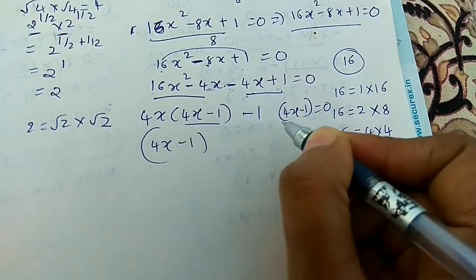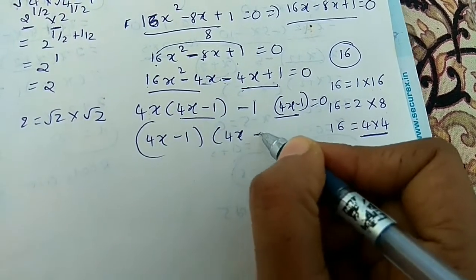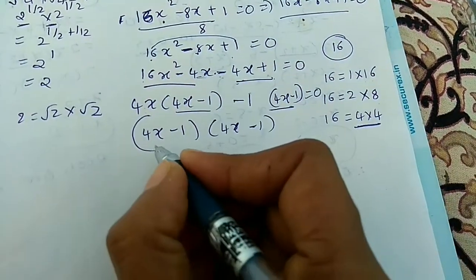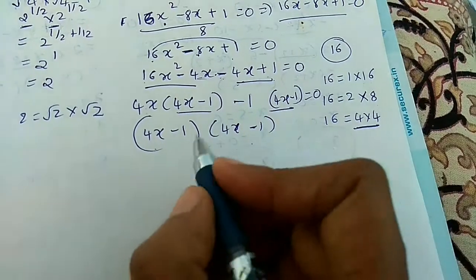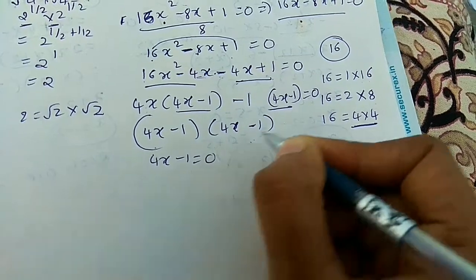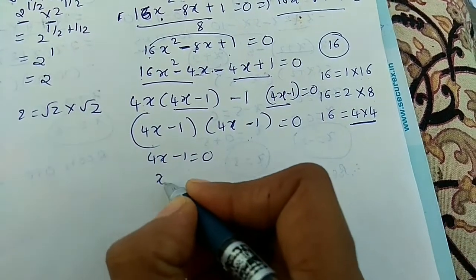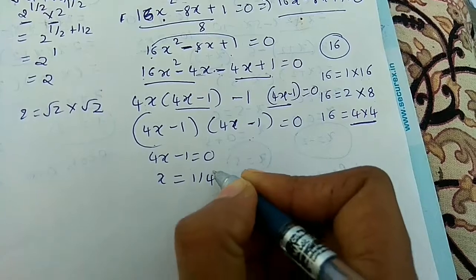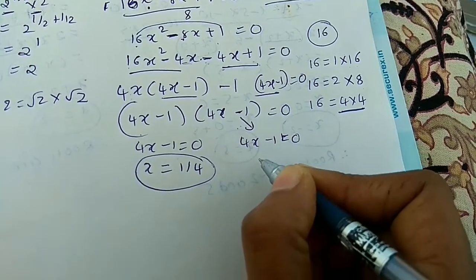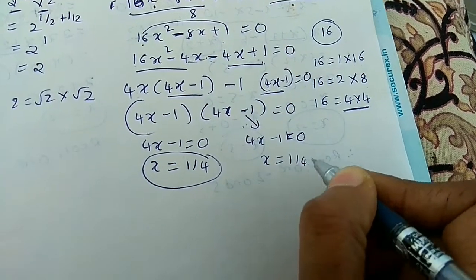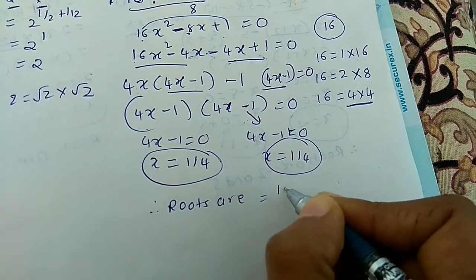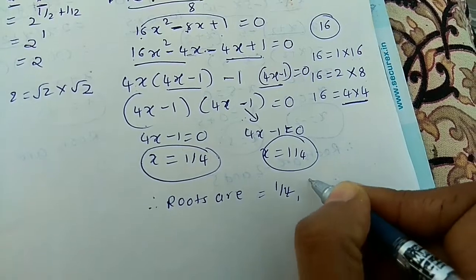We get factors (4x − 1)(4x − 1), giving two equal roots. Equating 4x − 1 = 0 gives x = 1/4. From both brackets x = 1/4. Therefore the roots are 1/4 and 1/4 — two equal roots.